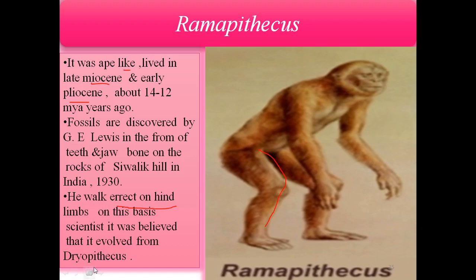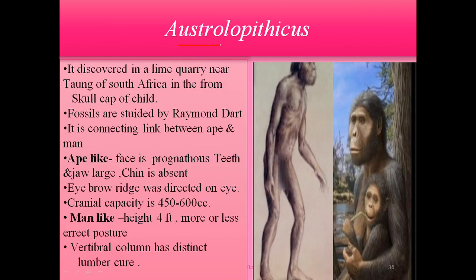Next is Australopithecus. It was discovered in a limestone quarry near Taung in South Africa in the form of the skull of a child, and studied by Raymond Dart. It is a connecting link between the ape and man. Its ape-like characteristics include: prognathous face, large teeth and jaw, absent chin, and present brow ridges above the eyes. Its cranial capacity is 450 to 600 cc.